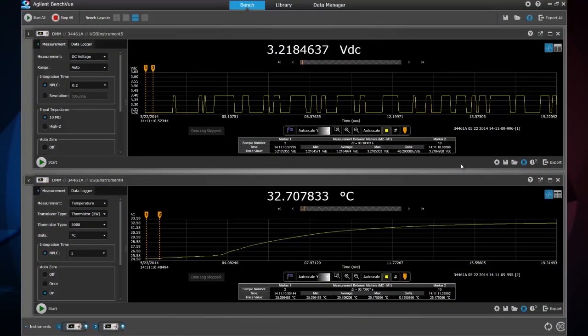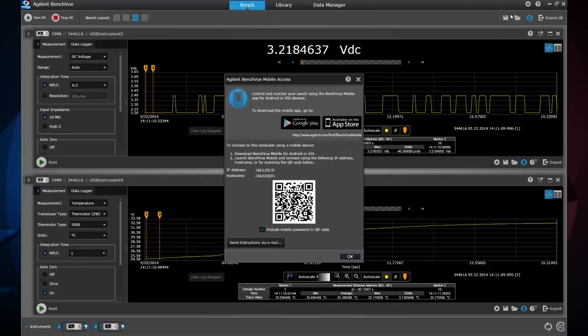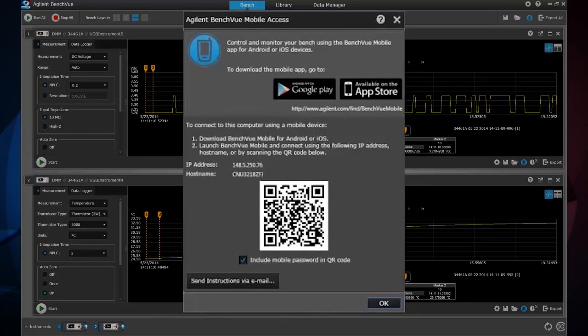The BenchView Mobile app accesses your instruments on your bench through the BenchView PC software. It does this using the IP address for your PC. Of course, instead of typing in your IP address manually, you can simply scan the QR code that BenchView generates.